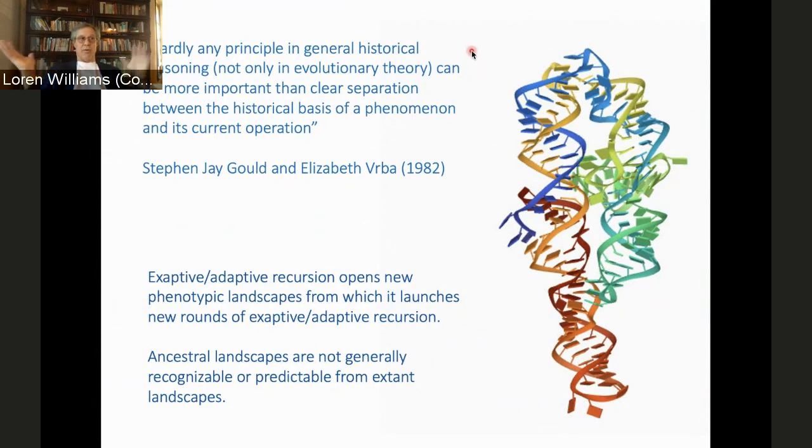And in fact, Stephen Gould and Elizabeth Verba recognize this exactly. And in their paper in 1982, they say it. This is before the RNA world, you know. The Gilbert paper came out, I think Gilbert should have read this 1982 paper before he proposed his RNA world model, because what he says is, what Gould and Verba say is, that in any principle in general historic reasoning, nothing is more important than a clear separation between historical basis and current operation. You can't look at RNA and understand very much about its history. That's what they're saying. And what we would say, we would say in a slightly different way, we'd say exaptive-adaptive recursion opens new phenotypic space. This is what I already said. And launches new rounds. And because of that, the ancestral landscape is not recognizable from the extant landscape. So this is something, when we think about the origin of life, I think it's always very tempting to look at things in extant biology and try to read deep meaning into it. And I think we need to be very cautious when we do that.